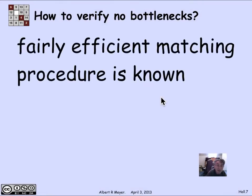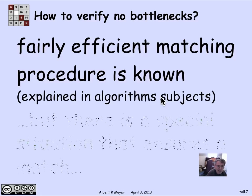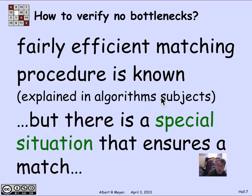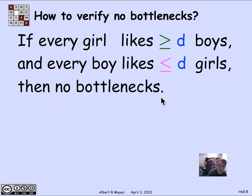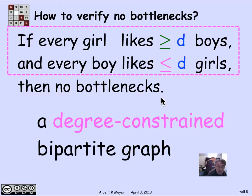How do you verify that there are no bottlenecks? In algorithms classes, you will learn a fairly efficient matching procedure — running about quadratically — for finding perfect matches when they exist. But there is one particular special case that ensures no bottlenecks that we'll be using several times this term. That special situation is when every girl likes at least D boys, and every boy likes at most D girls. This is called a degree-constrained graph. If a graph is degree-constrained, then there are no bottlenecks.